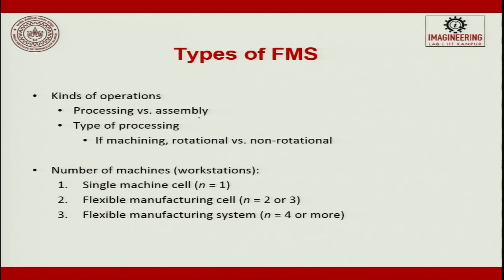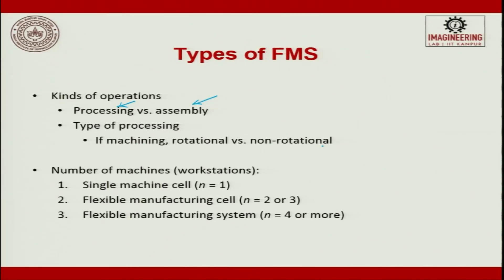Regarding kinds of operations — processing versus assembly — FMS can be used for both. For example, in spot welding for an automobile, the number of spots and the frame dimensions can be increased or decreased via programming on a material handling or assembling device. In terms of number of machines: a single machine cell has n=1; a flexible manufacturing cell has n=2 or more (2 or 3); and a flexible manufacturing system has n=4 or more.